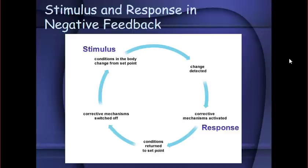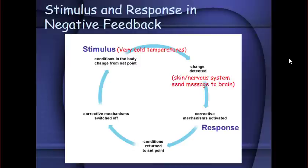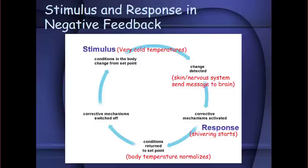The negative feedback system uses stimulus and response to accomplish its tasks. If the body senses very cold temperatures, that's a stimulus signaling a change from the set point. The skin and nervous system send a message to the brain, which initiates a corrective mechanism — in this case, shivering. Shivering continues until the body's temperature normalizes, returning to the set point. At that point, homeostasis has been restored and the body stops shivering.